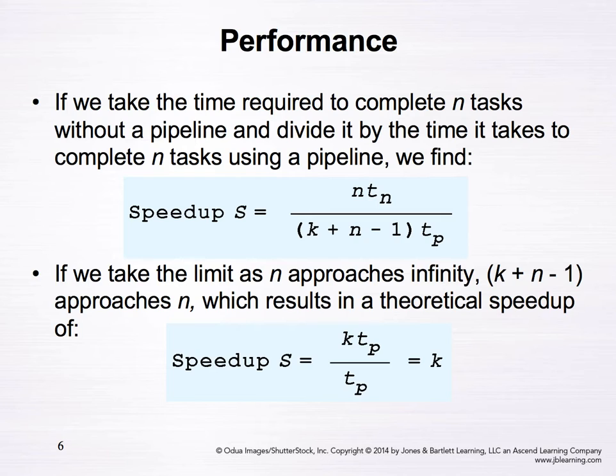If we take the time required to complete n tasks without a pipeline and divide it by the time it takes using a pipeline, we get the performance gain. Speedup S equals n times k times tp divided by (k plus n minus 1) times tp, where k times tp is the time to complete one task without pipelining, and the denominator is the time to complete n tasks with pipelining.